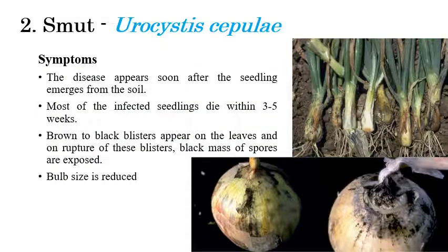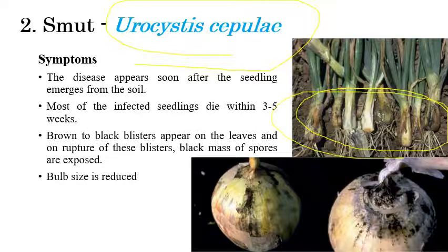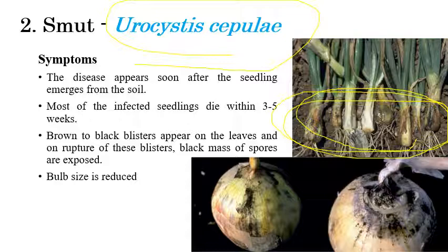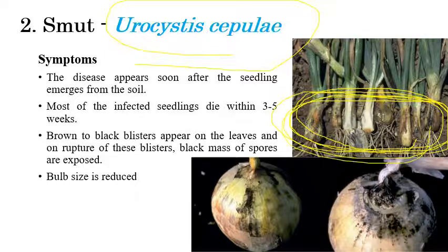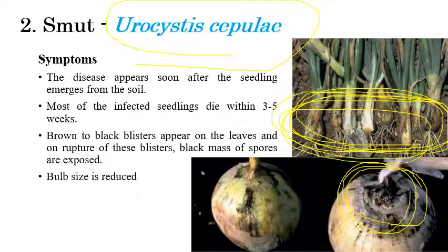The second disease is Smudge, caused by Urocystis cepulae. This disease appears especially during the seedling stage — during emergence of seedlings or initial stages of crop growth. Due to Smudge disease, seedlings will die within three to five weeks after transplanting. Brown or black color blisters or powdery growth can be seen on seedlings, especially on the root region, bulbs, and matured bulbs.